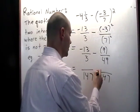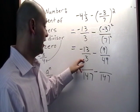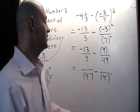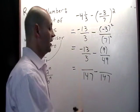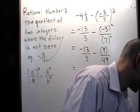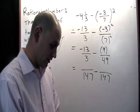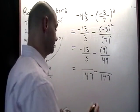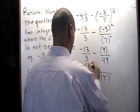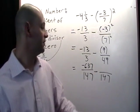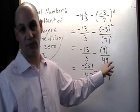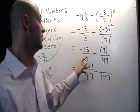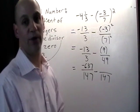And then as we talked about in a previous lesson here we're going to just take a look at how did we get from 3 to 147 and we multiplied by 49. So we're going to do the same thing to the top, negative 13 times 49, and I get negative 637. And similarly over here we're going to look at how did we get from 49 to 147 and the answer is we multiplied by 3. So we're going to do the same thing to 9, multiply by 3 and we get 27.